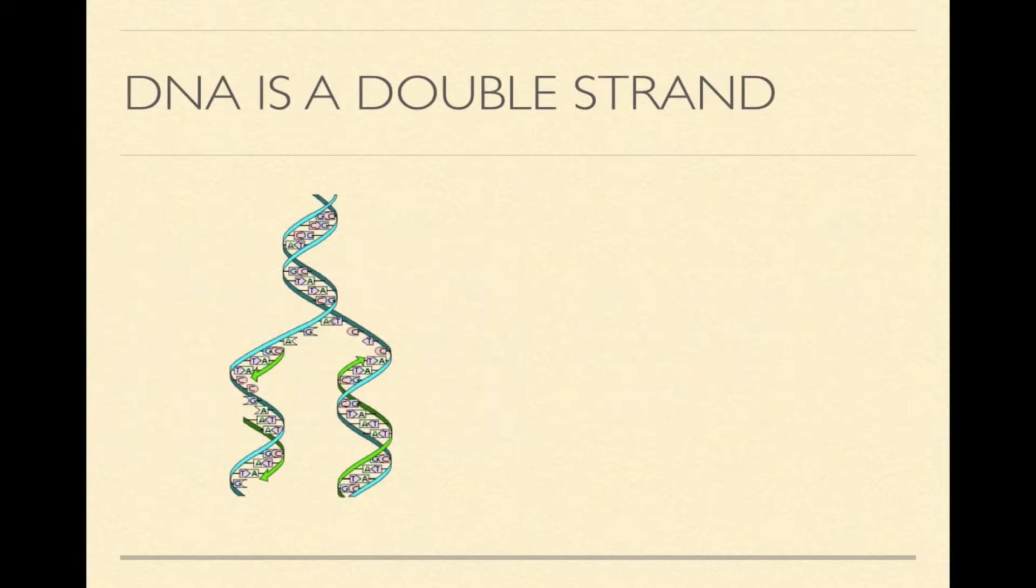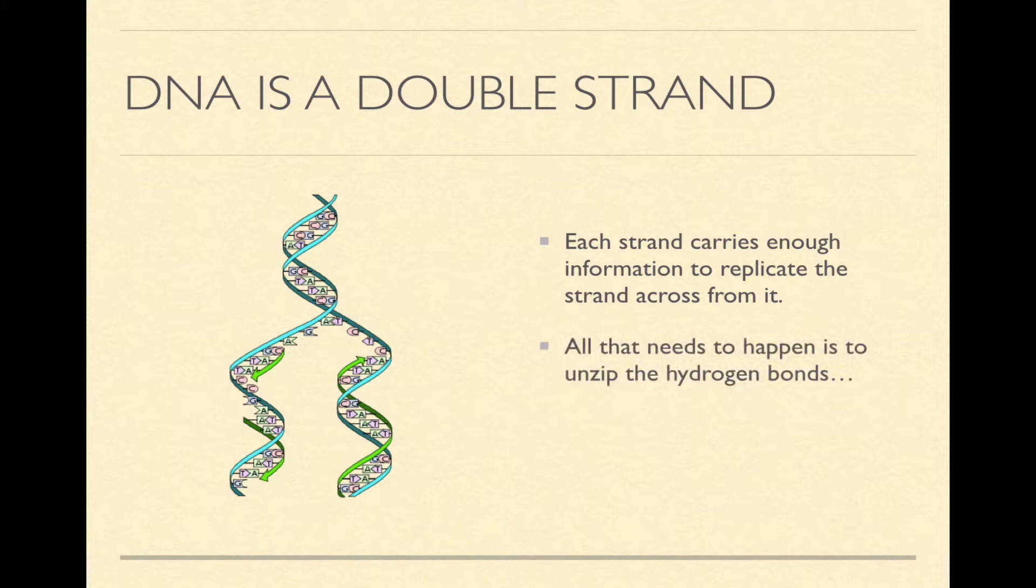So we know DNA is a double strand, so it makes sense, because we know that A pairs with T and C pairs with G, that if you unzip the two strands, then there's enough information in this system because the strand across from the other strand tells you what's missing. So that all you need to do is unzip the hydrogen bonds and fill in the complementary nucleotides.